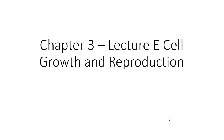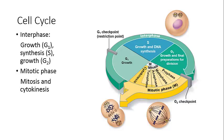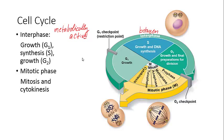This is Chapter 3, Lecture E: Cell Growth and Reproduction. The cell cycle is a very important series of changes that goes on all throughout the lifespan of the cell. As shown in this pie chart, the large majority of the cell cycle is interphase, which is the stage between cell division. The term is somewhat misleading because it's a very metabolically active time period. It's a growth phase subdivided into the G1 phase, the S phase, and the G2 phase.